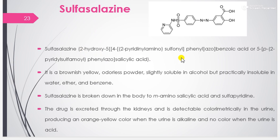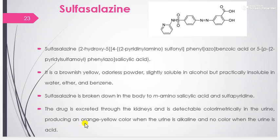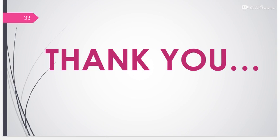The next drug is sulfasalazine: 2-hydroxy-5-[[4-(2-pyrimidinylaminosulfonyl)phenyl]azo]benzoic acid, also known as 5-(para-(2-pyridylsulfamoyl)phenylazo)salicylic acid. It is a brownish-yellow, odorless powder, slightly soluble in alcohol but practically insoluble in water, ether, and benzene. It is broken down in the body to meta-aminosalicylic acid and sulfapyridine. The drug is excreted by the kidney and is detectable colorimetrically in the urine, producing an orange-yellow color when urine is alkaline and no color when the urine is acidic. In the next video lecture we will study different sulfonamides.